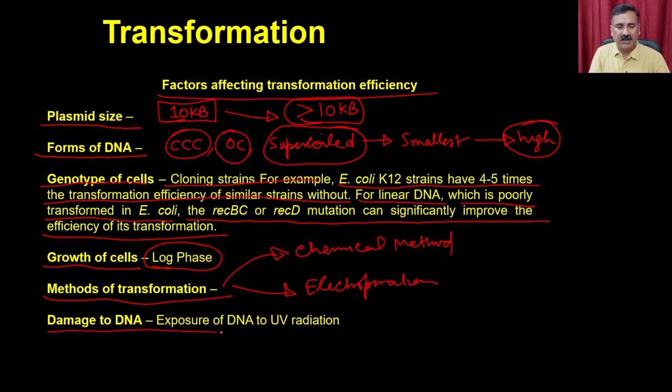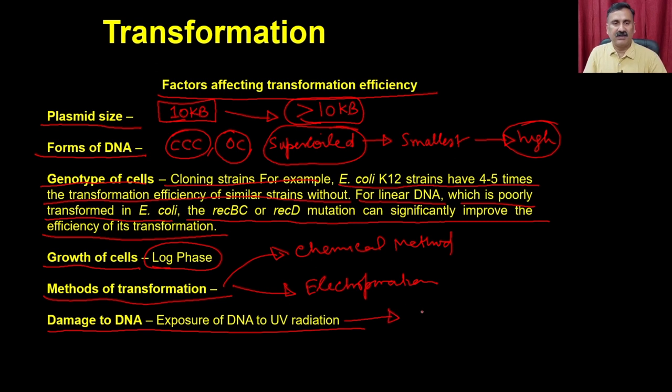Another factor affecting transformation efficiency is UV radiation exposure to DNA, which reduces efficiency. We have prepared a demo clip to show the different steps of transformation, where students discuss practical considerations for performing transformations. Let me take you to the lab for a demo on how to transform competent cells.